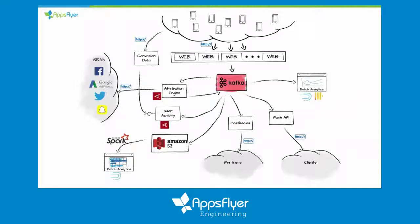We also do batch processing later in Spark, and Druid reads directly from Kafka. So it's a very major part of our system. There's a nice analogy I always like to mention: if your production system is a body, Kafka would be the circulatory system — it's the way all data moves around the production system.